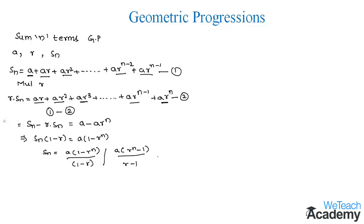When the value of r is not equal to 1, we use the formula a into 1 minus r to the power n, divided by 1 minus r. When r is not equal to 1, we can also write it as a into r to the power n minus 1, divided by r minus 1.